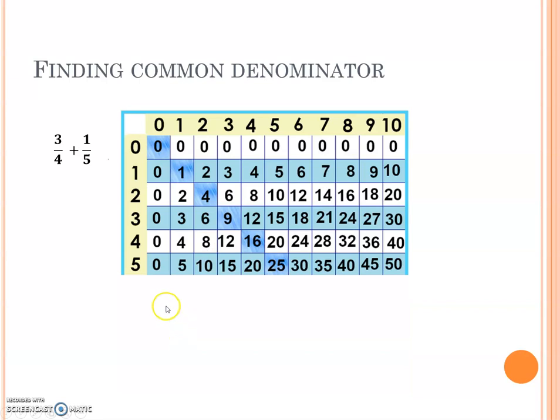Final example, 3 fourths and 1 fifth. These denominators are what we call consecutive numbers, counting one right after the other. We can still find a common denominator. Start with the big one. 5.